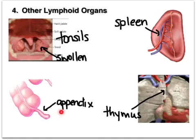The second lymphoid organ is the appendix. Once thought to be a vestigial organ — meaning it may have had a function in evolutionary history but no longer does — we now know it serves as a home for extra good bacteria from the large intestine, in case that bacteria needs to be replenished.